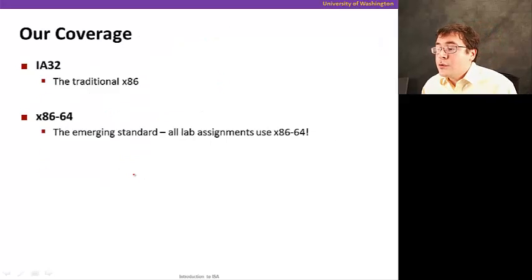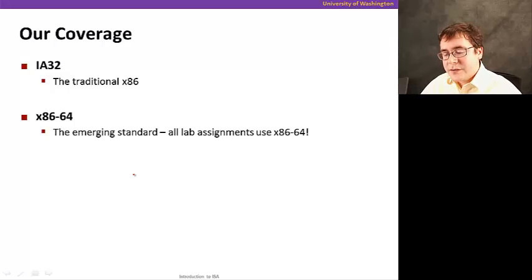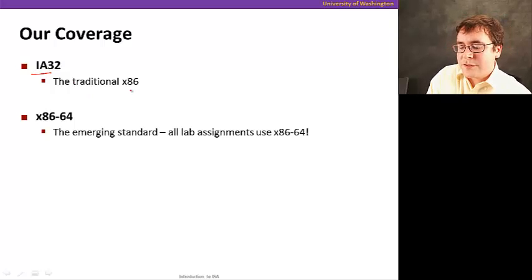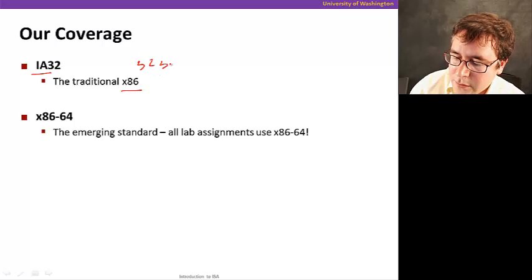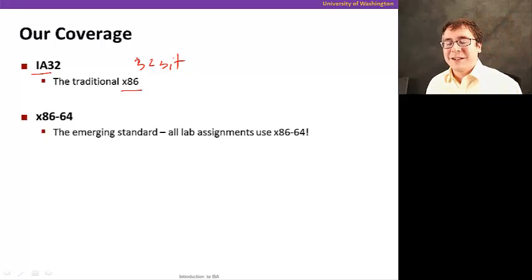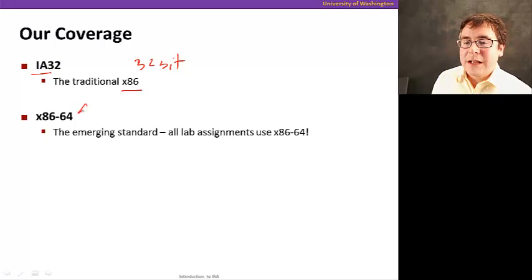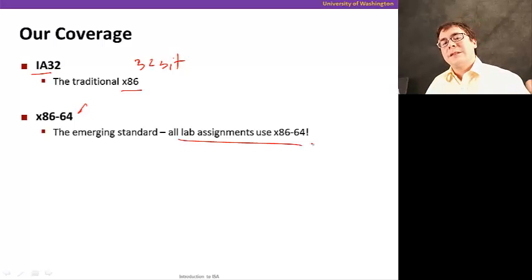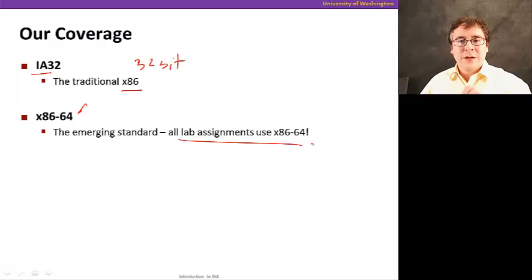To end this first module of this section: in the following section on x86 programming, we're going to look at IA32, the traditional 32-bit ISA, and also the 64-bit version of the x86 ISA. Keep in mind that all lab assignments are going to use x86-64, but when teaching assembly programming, it will be largely transparent — you'll know when it matters. Thank you, and see you soon.